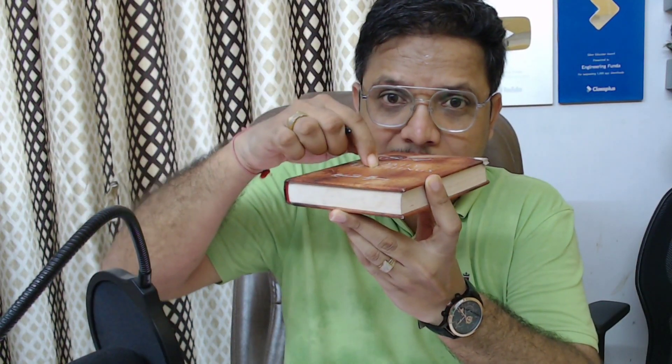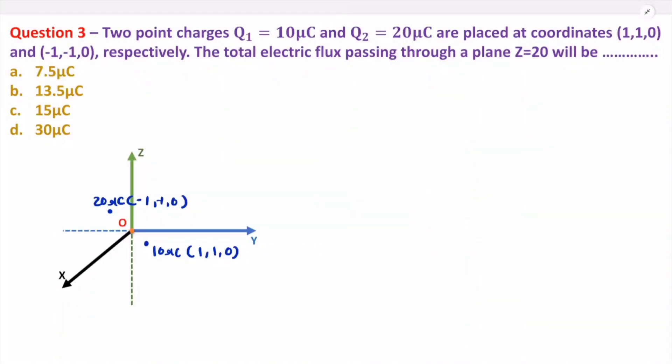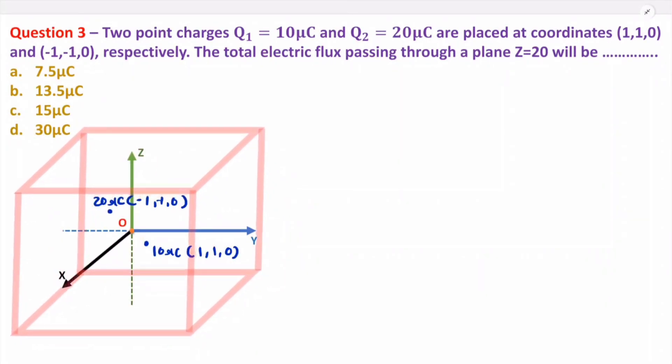Since Gauss's law applies to an enclosed surface, I will consider additional surfaces. We have the plane z = 20 as the top surface, z = minus 20 as the bottom surface, plus front, back, right, and left surfaces, forming a closed box. Let us now apply Gauss's law: total flux through the enclosed surface equals the charge enclosed inside.